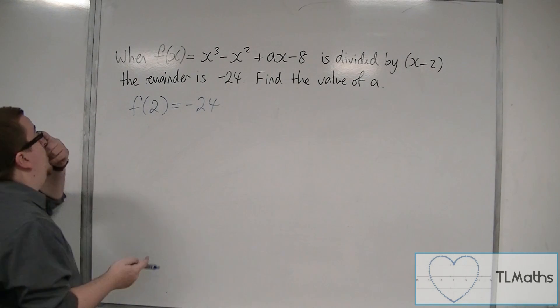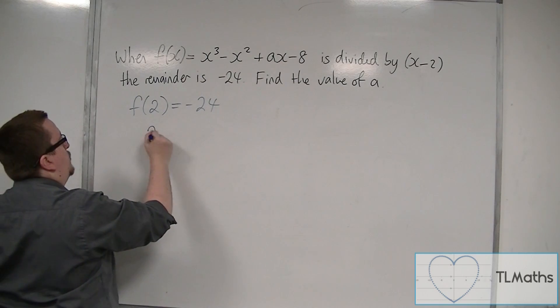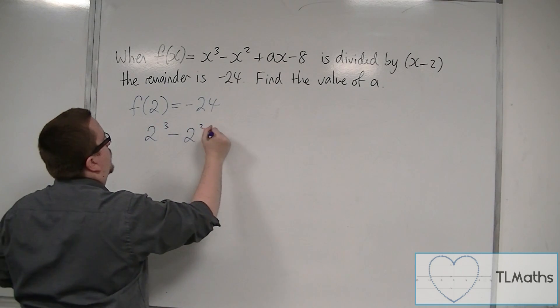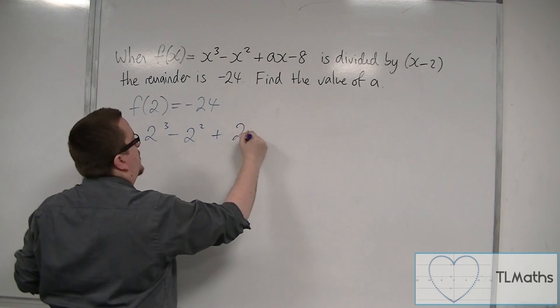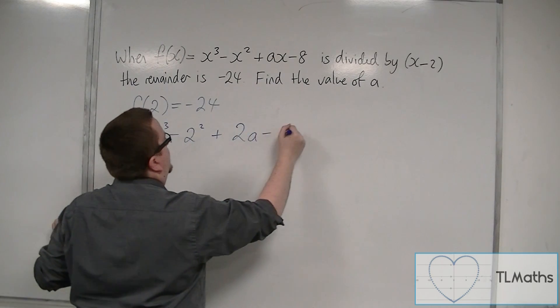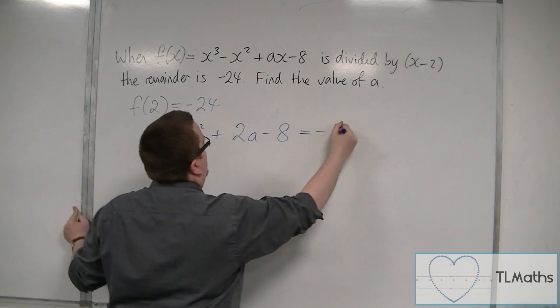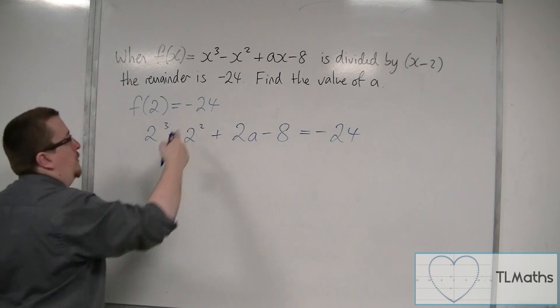So we substitute 2 into the polynomial: we're going to get 2 cubed, take away 2 squared, plus a times 2 — so 2a — take away 8, and that's going to be equal to minus 24.